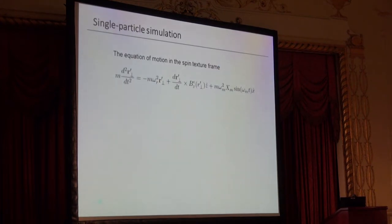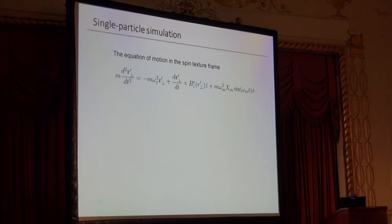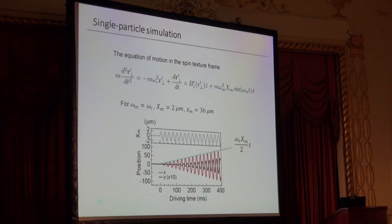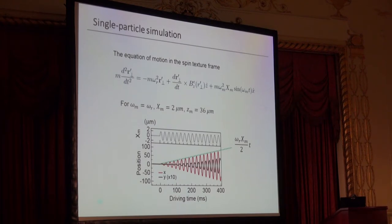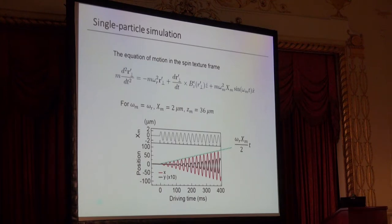This is a single-particle equation of motion in the spin-texture frame, including the restoring force, Lorentz force, and external driving force. With our parameters — 2-micrometer shaking amplitude and 36-micrometer separation between the monopole and condensate — the x-direction motion linearly amplifies as expected from resonance. The y-directional motion is not negligible: after about half a second of driving, the amplitude reaches about 5 micrometers, which is detectable. So we just ran the experiment.